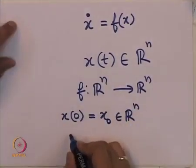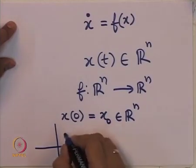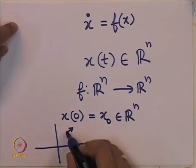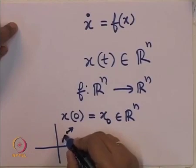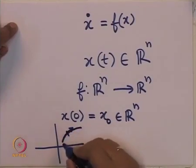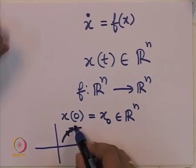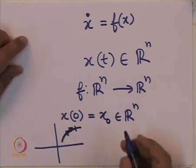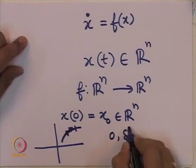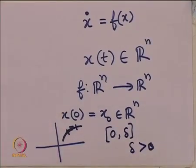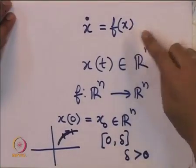We are interested in the question: suppose this is our space Rn, this is our point x0, and the direction is given by f evaluated at the point x0. We are interested in answering when there exists a trajectory that starts from x0 at t equals 0, and there is a unique trajectory for some time duration 0 to delta, where delta is some positive number, possibly very small. For this duration of time, we want a unique solution to x-dot equals f. This is the question we will answer in the next few lectures.